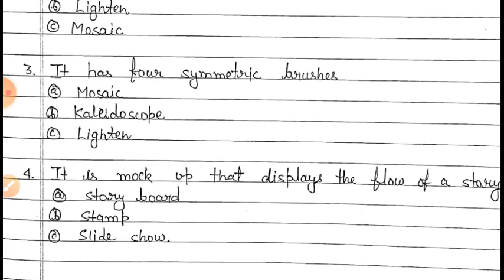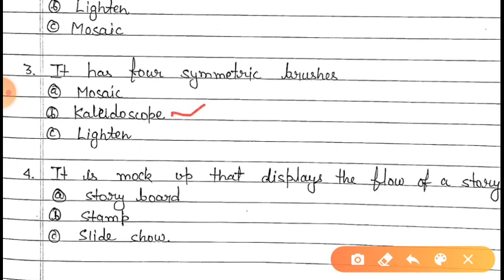Now come to question number three. Question number three is: it has four symmetric brushes. In this question you will get three options — option A is Mosaic, option B is Kaleidoscope, and option C is Lighten. Option B is the right answer — Kaleidoscope. The Kaleidoscope effect creates artistic freehand patterns and it has four symmetric brushes.